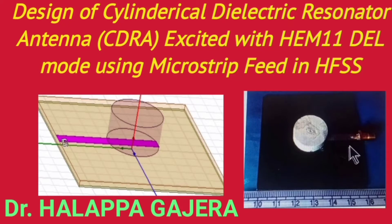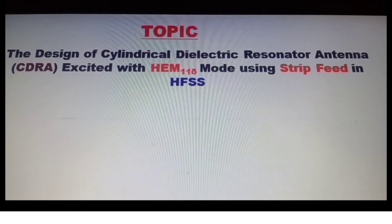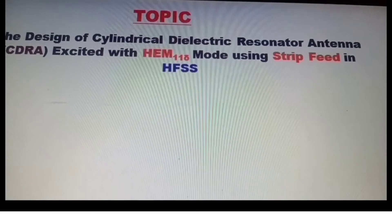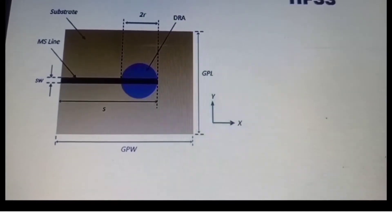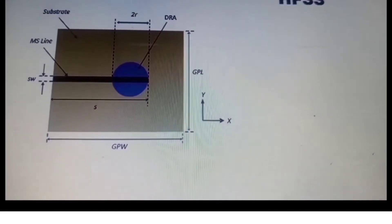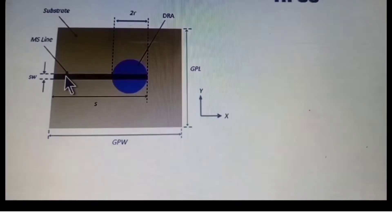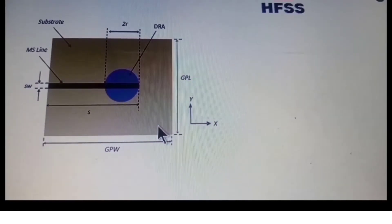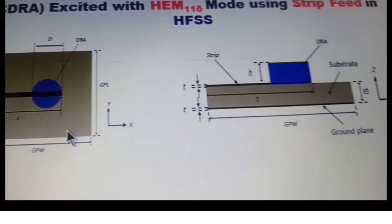Good morning everyone. In this session we will discuss how to design a cylindrical dielectric resonator antenna excited with the HEM11 mode using microstrip feed. Here is a pictorial engineering drawing of the dielectric resonator antenna — it shows the cylindrical dielectric resonator, the microstrip feed, the substrate, and below that the ground plane. All variables are declared in the drawing.